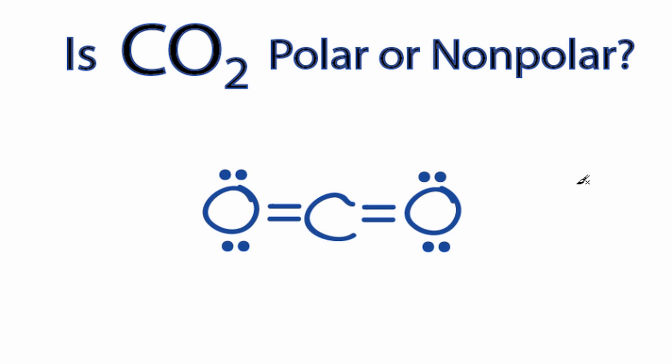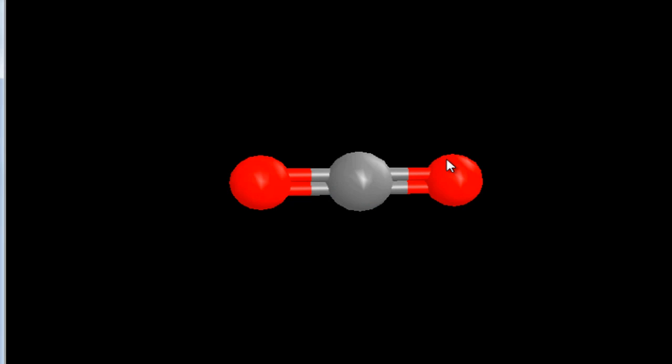Let's take a look at the CO2 molecule in three dimensions. So here we have the carbon in the center, and the oxygens on either side. So our Lewis structure is accurate. This is a linear molecule, double bonds between the carbon and the oxygens. Each side is the same. It's symmetrical.